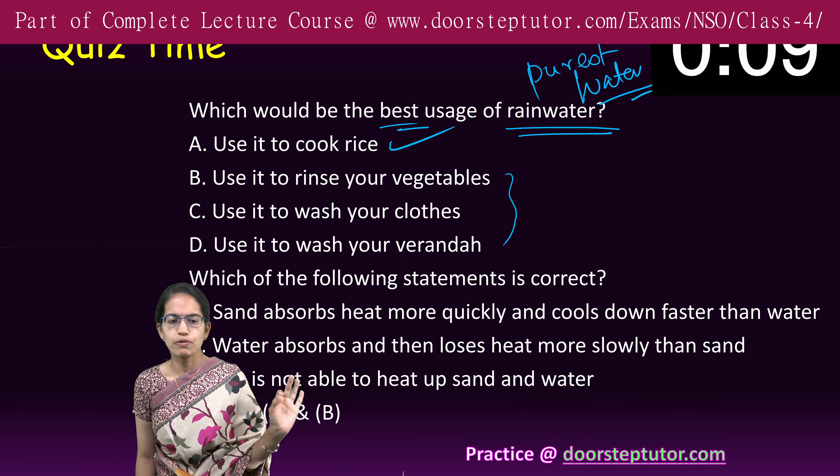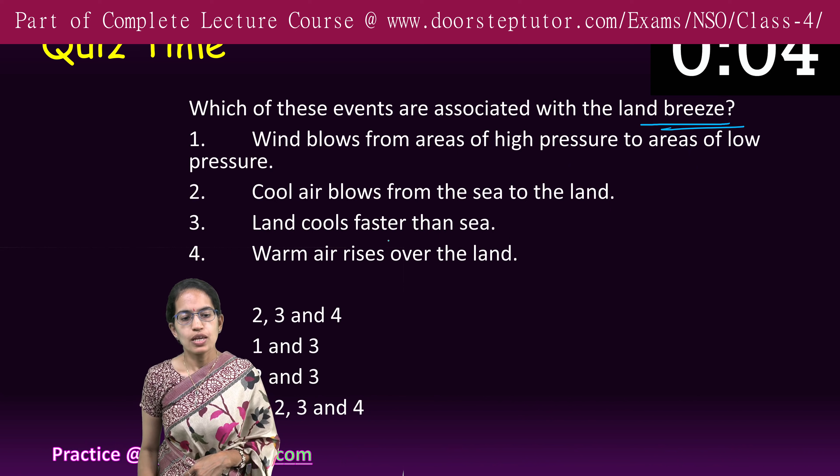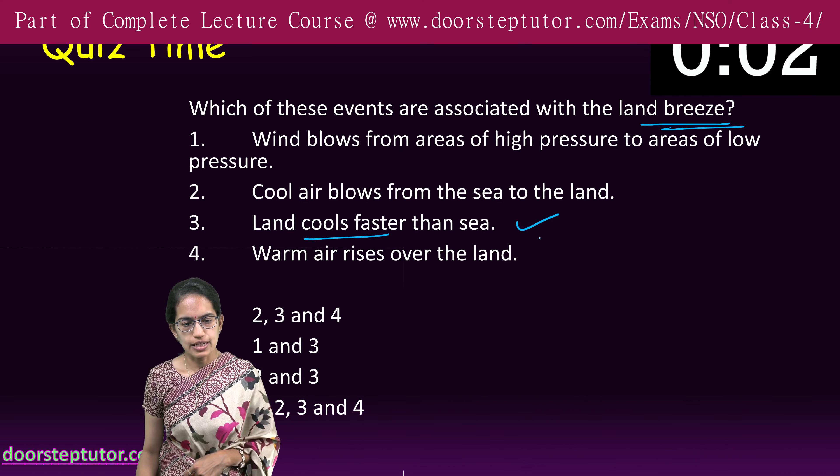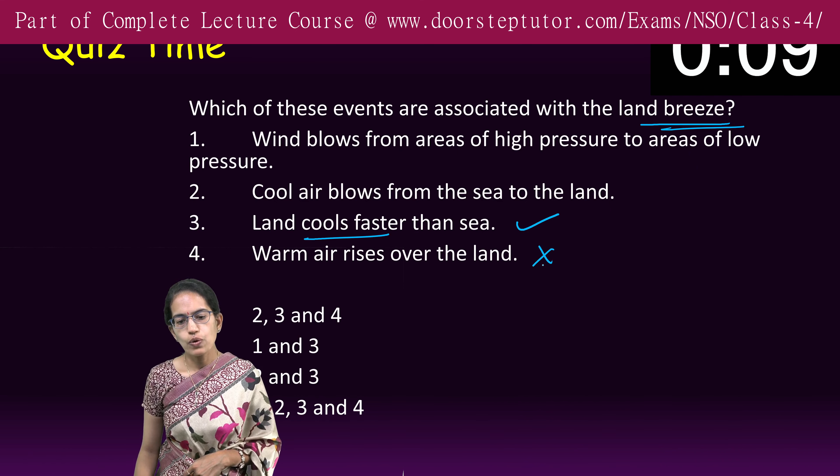The next question is: which of the events are associated with land breeze? Land breeze blows from land to sea. Land cools faster — that is correct. Warm air rises over the land — no, it rises over the water. Cool air blows from sea to land — that's incorrect. Wind blows from high pressure to low pressure — that's always true; in land breeze, it blows from land to sea during the night. So 1 and 3 are the right options, and 2 and 4 are incorrect.